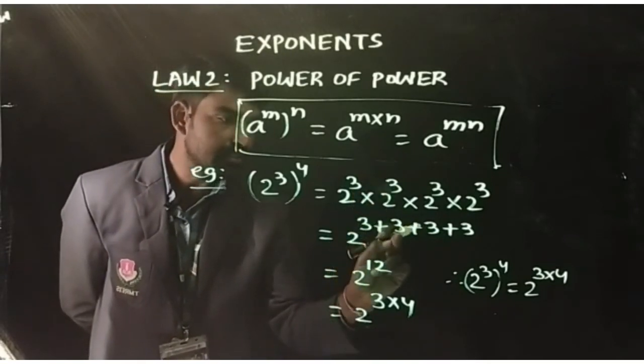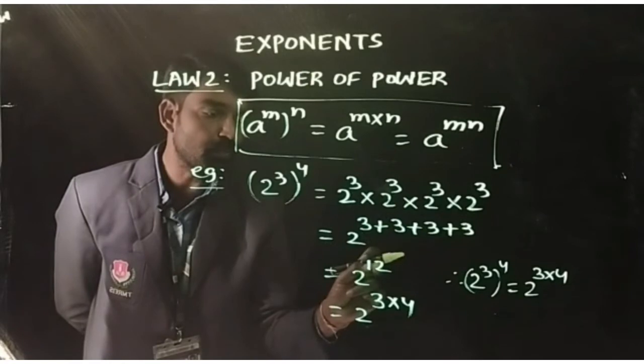So 2^(3+3) is 6, 6+3 is 9, 9+3 is 12. 2^12.